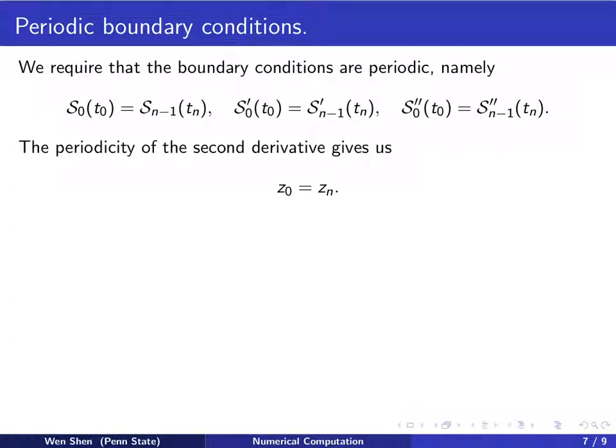Then, by using this condition here for the second derivative, remember they are denoted as z's, so we immediately have z_0 equals z_n.